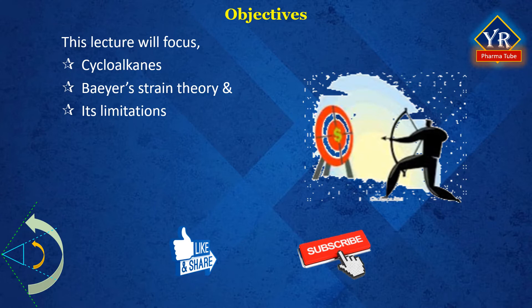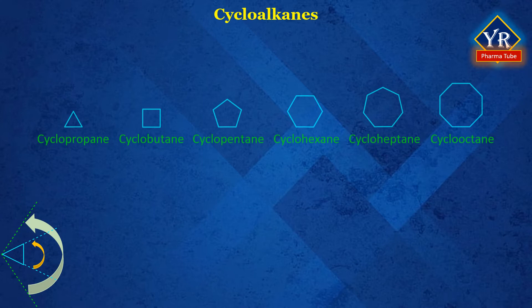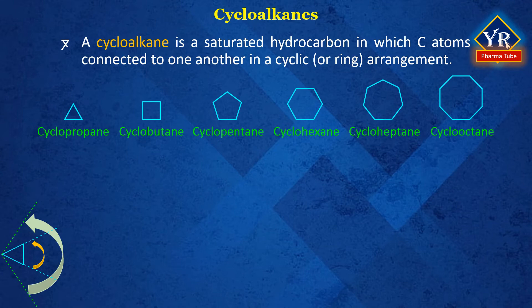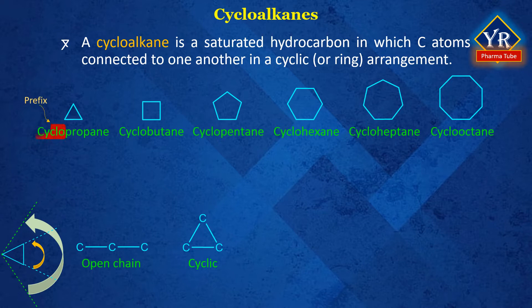Introduction to cycloalkanes. Cycloalkanes are the alkanes with their carbon atoms arranged in a ring. In other words, a cycloalkane is a saturated hydrocarbon in which carbon atoms are connected to one another in a cyclic or ring arrangement. Note that the prefix 'cyclo' is added to the alkane name that signifies the number of carbon atoms in the ring.